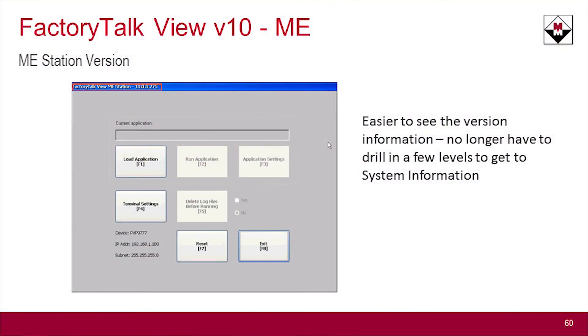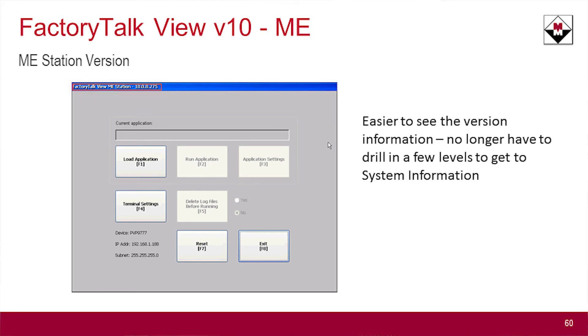A neat small feature they've finally added: usually when there's an issue with a PanelView terminal, the first question is always what version is it — and you'd have to go dig through system information to find it. Now they've put it right up top on the menu bar, so all you have to do is look at the front startup screen and you have that information right there.